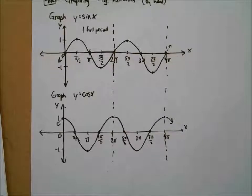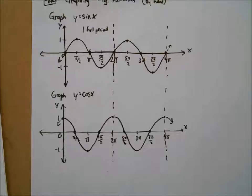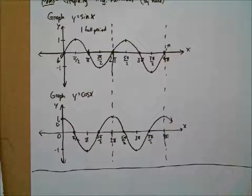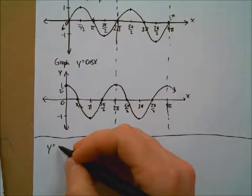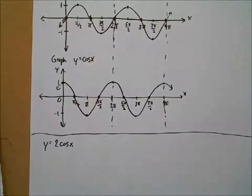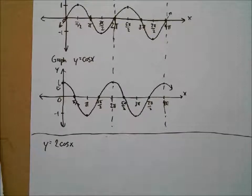Today we're going to take these sine and cosines and do two transformations, and tomorrow we'll do two additional transformations, which will cover all of our sine and cosine stuff. Then Friday will be a quiz, and we'll start looking at tangent. So let's transform these a little bit. Let's talk about y equals two cosine x. After having gone through algebra two, transformations will probably be familiar — what happens when we throw a coefficient in front of our parent function cosine x?